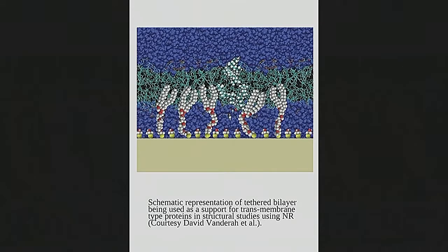Now, suppose you wanted to study transmembrane proteins that stick all the way through the bilayer. To get it off your solid support substrate, you have to suspend it above that. Biochemists at NIST — David Vanderah — have been able to make tethered links that allow the layer to float above, so you get fluid medium on both sides of the bilayer, and now it's possible to study things that actually extend through. This is a lot of hard work by lots of people — you just don't take a sample and throw it on.